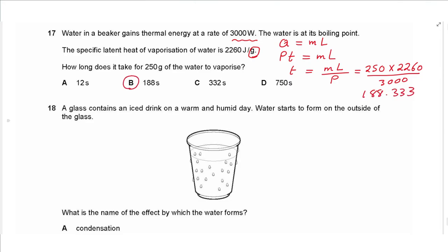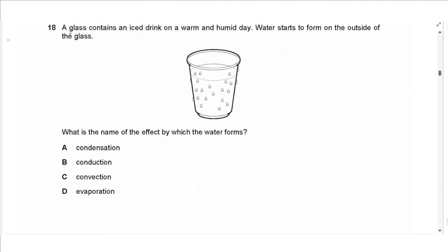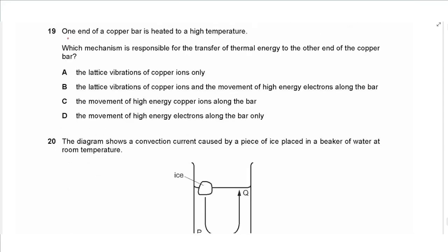Question 18: a glass contains an ice drink and on a warm, humid day water forms on the outside of the glass. This is water vapor converting to liquid water — the process is condensation.